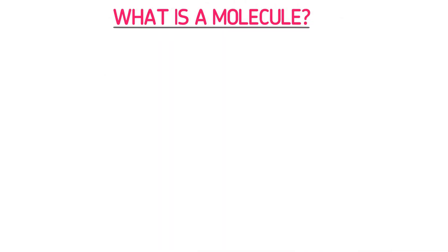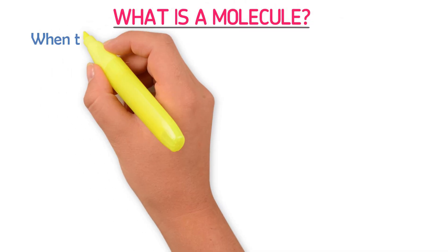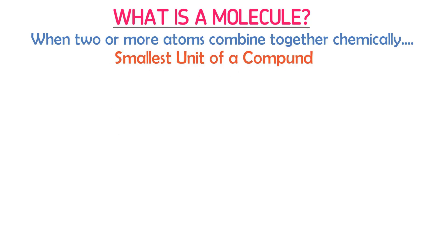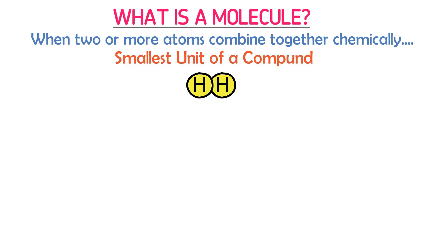What is a molecule? When two or more atoms combine together chemically, we call it a molecule. Molecule is the smallest unit of a compound. For example, consider two hydrogen atoms. When they come together and join chemically, we call this a molecule of hydrogen.